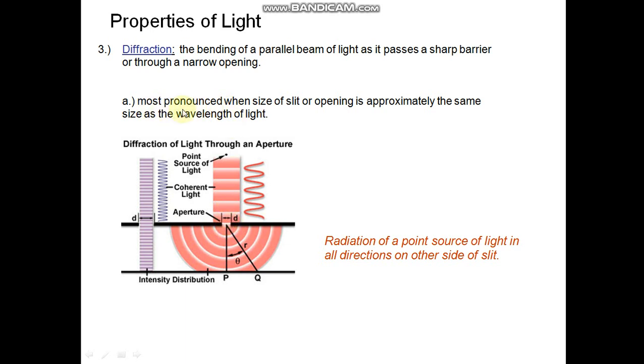This is the wavelength of light lambda and d is equal. Then most pronounced effect. Diffraction of light through an aperture. This is the diffraction. Radiation of a point source of light in all directions on the other side of slit.